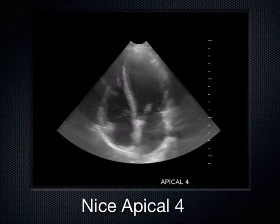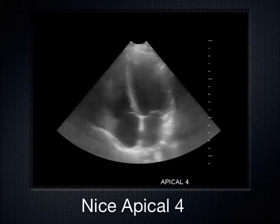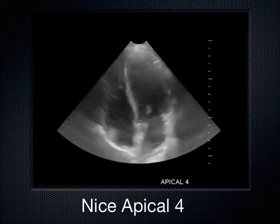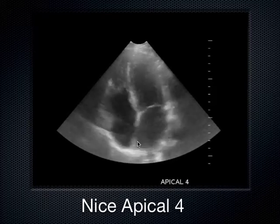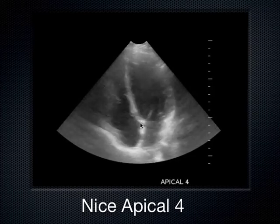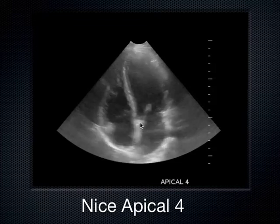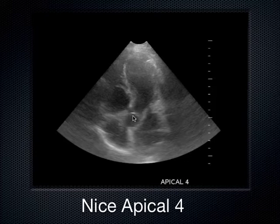This is a normal apical four-chamber view: left ventricle, right ventricle, right atrium, and left atrium. Occasionally the aortic valve comes into view — when it does, we call it the apical five-chamber view, the fifth chamber being the aortic valve. So we see LV, RV, RA, LA, and the aortic valve.